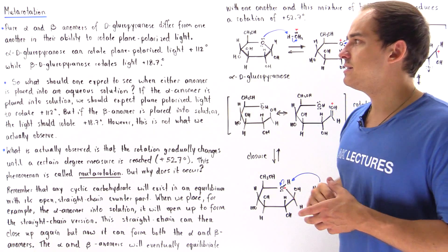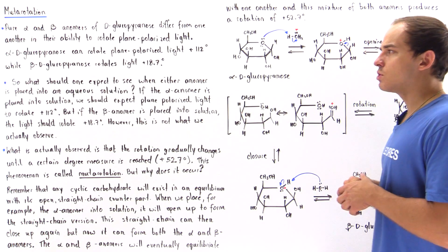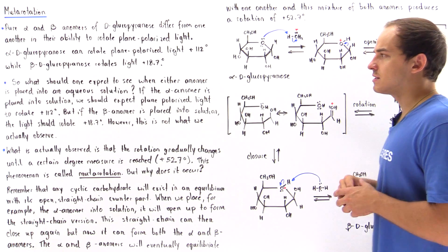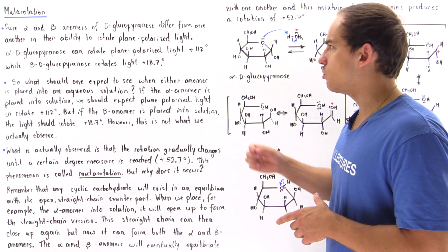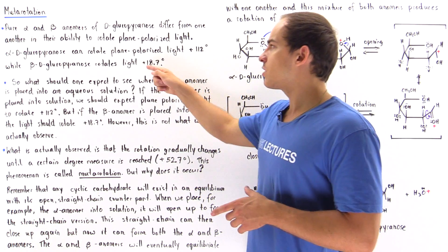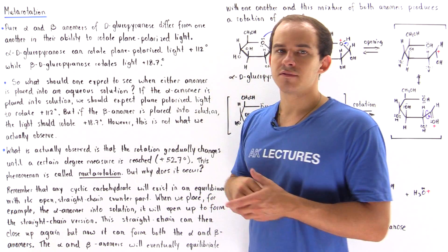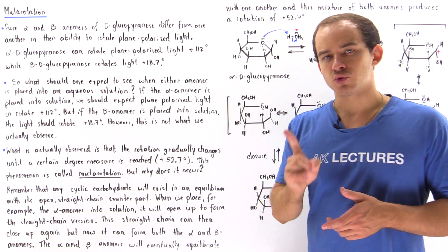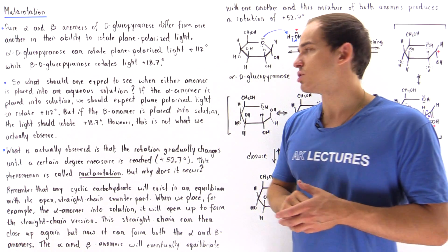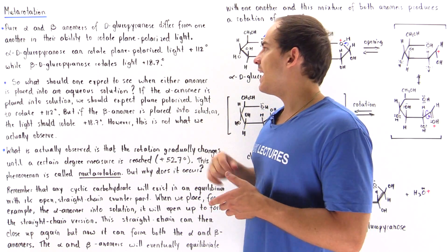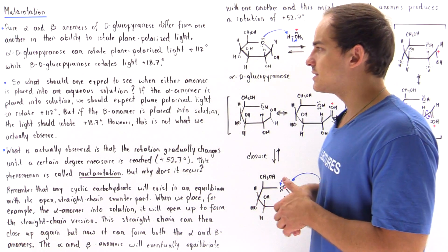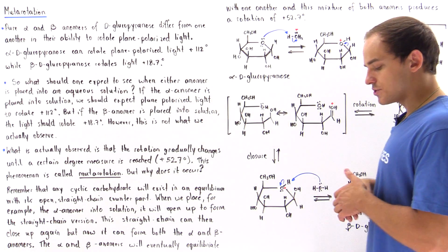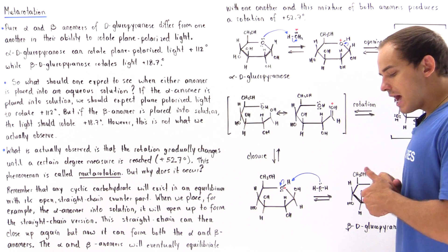— our beta-D-glucopyranose, rotates light also in the clockwise positive direction, but it only rotates 18.7 degrees.